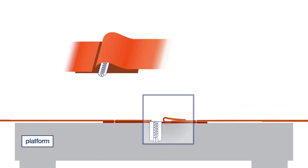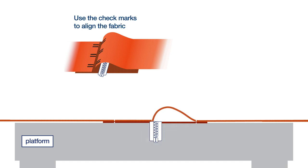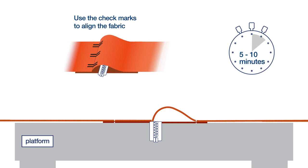Align the fabric ends by forming a bubble. The check marks help you with the alignment. Take time to carefully align the ends. The seam wire will only pass through all loops easily if the fabric edges and check marks have been aligned.